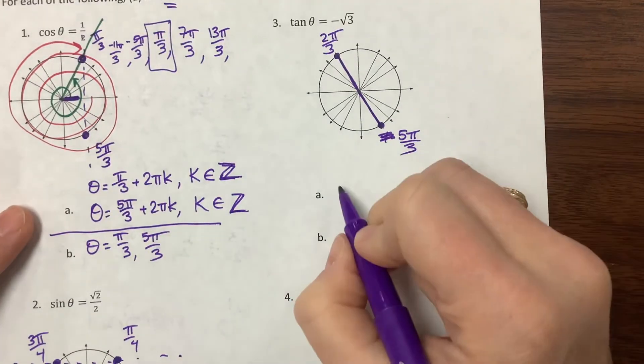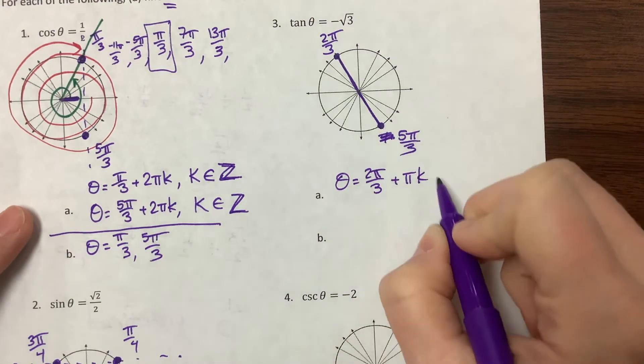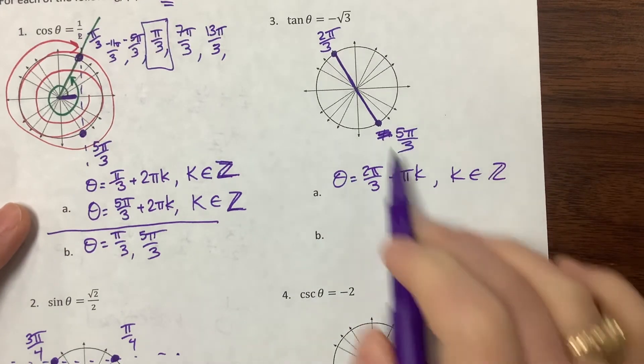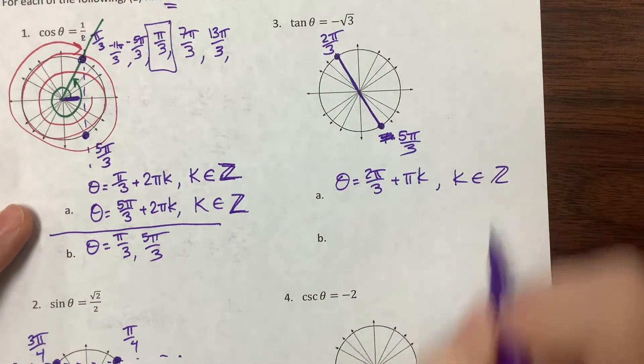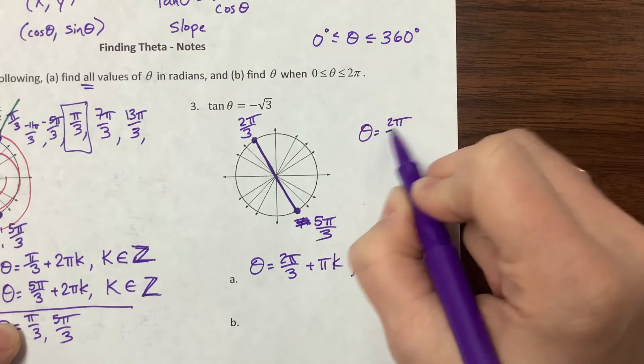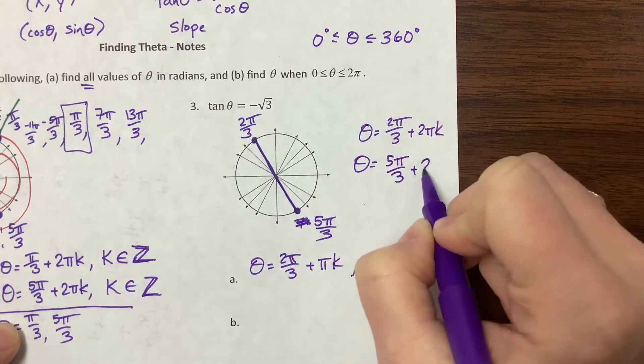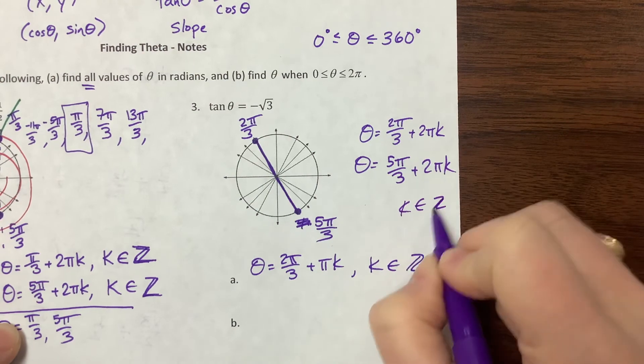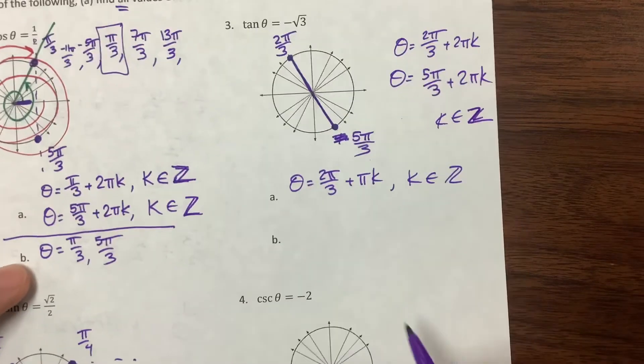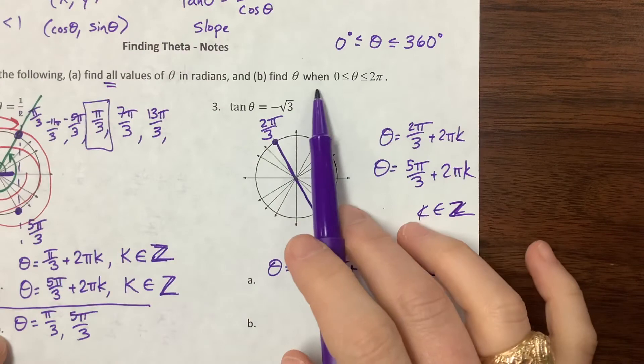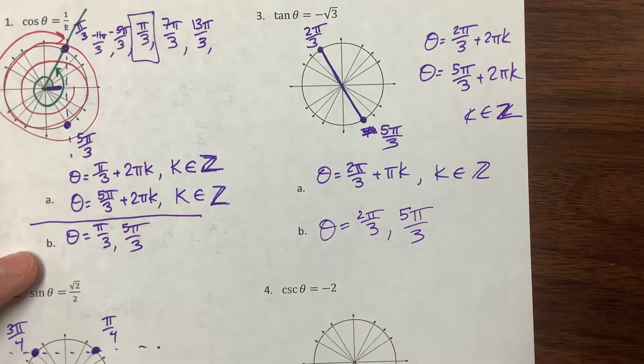So notice another thing that we can think about here is that these are exactly 180. They're exactly pi units apart. So when they say find all, my favorite way to find all is to just say that theta is equal to 2 pi over 3 plus pi k, where k is an element of the integers. So notice if I add pi, I end up here. And then I add pi and I end up here. And I add pi and I end up here. So this is the efficient way to do it. If you decided that you wanted to tell me that it's 2 pi over 3 plus 2 pi k, and you wanted to tell me that it's 5 pi over 3 plus 2 pi k, you're not wrong. You just had to write, and obviously, you're not wrong. I just, I'm lazy. I mean efficient, and I'm going to say it as fast as I can. So then when they say between 0 and 2 pi, what are my values? Well, they were 2 pi over 3 and 5 pi over 3.